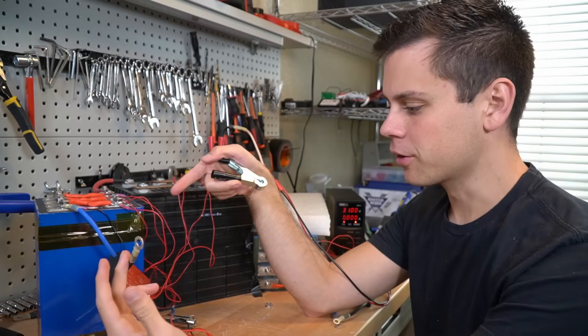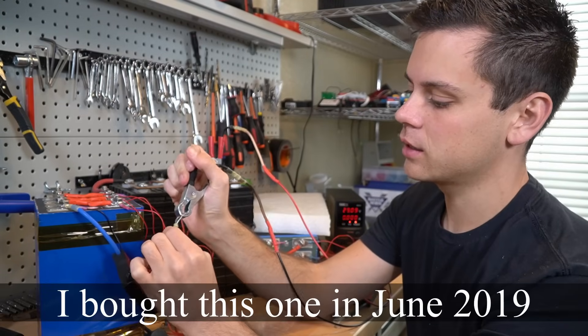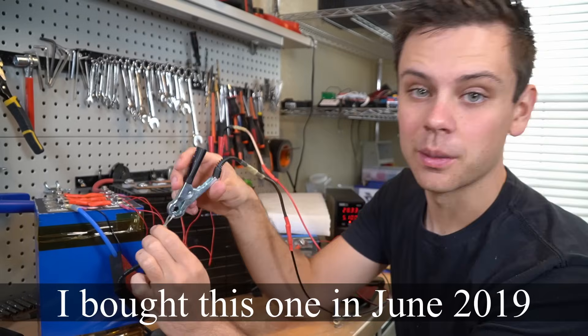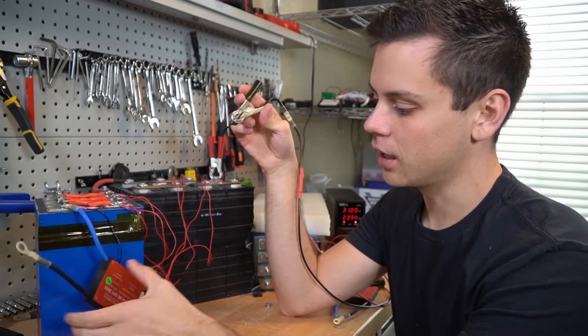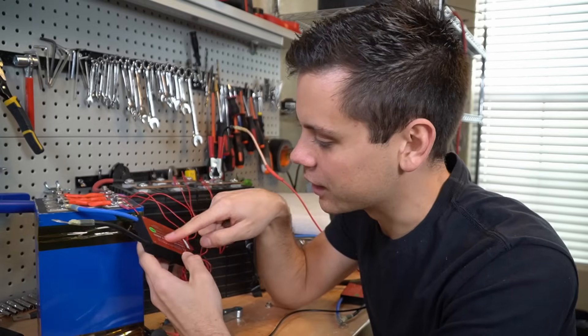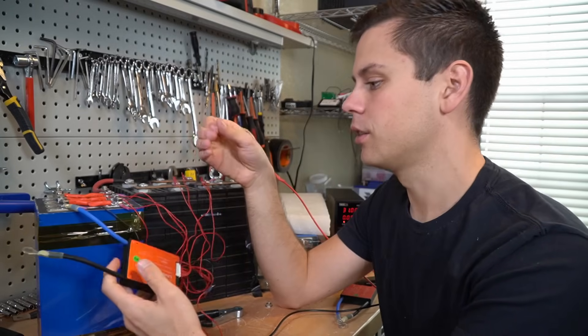Now we have a 24 volt BMS and we're going to connect it while it's frozen and it does not have low temperature disconnect. Absolutely not. And there is literally ice on here. So it should be able to cut itself off. That sucks.